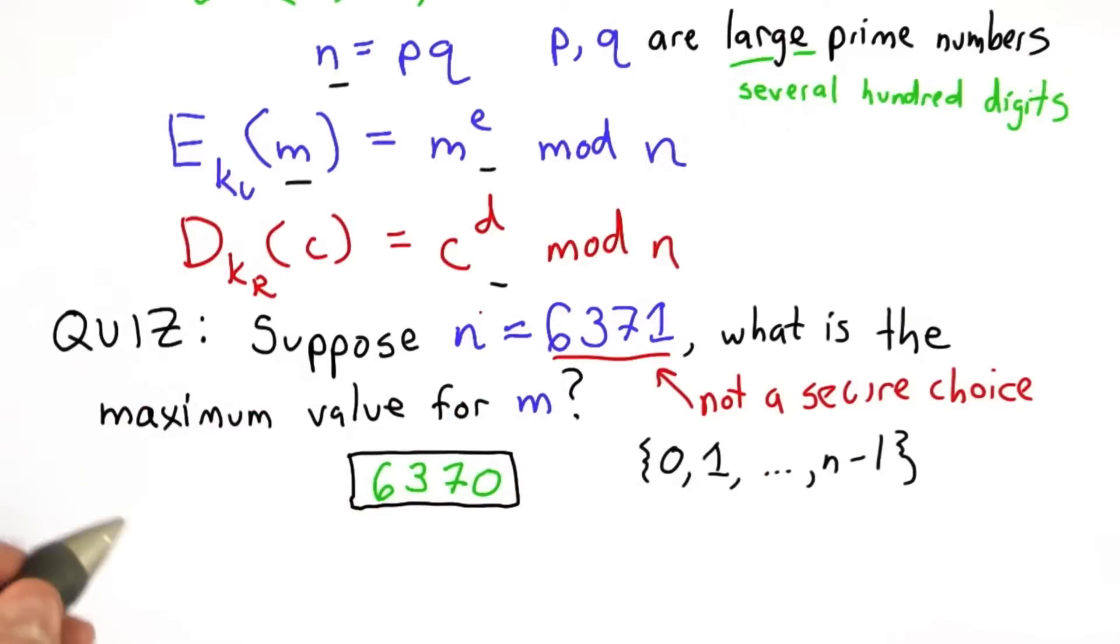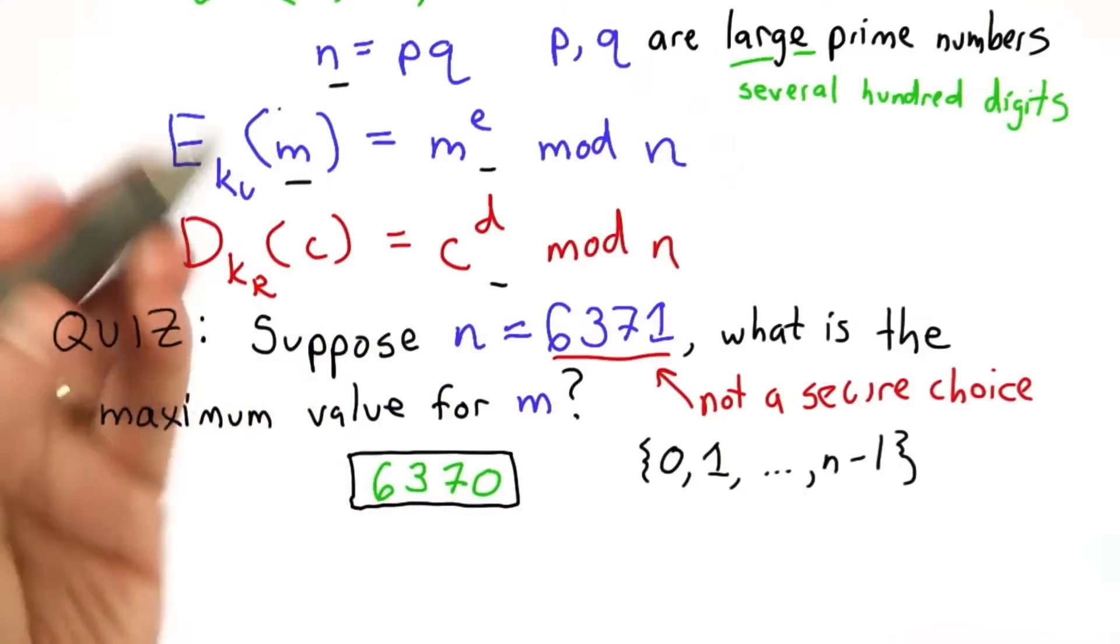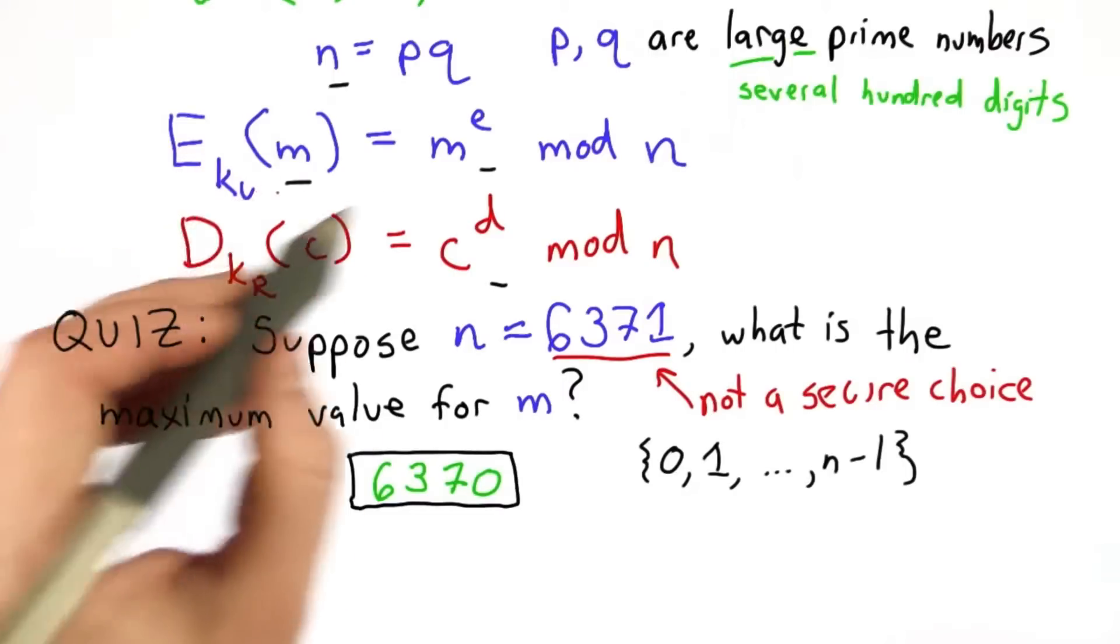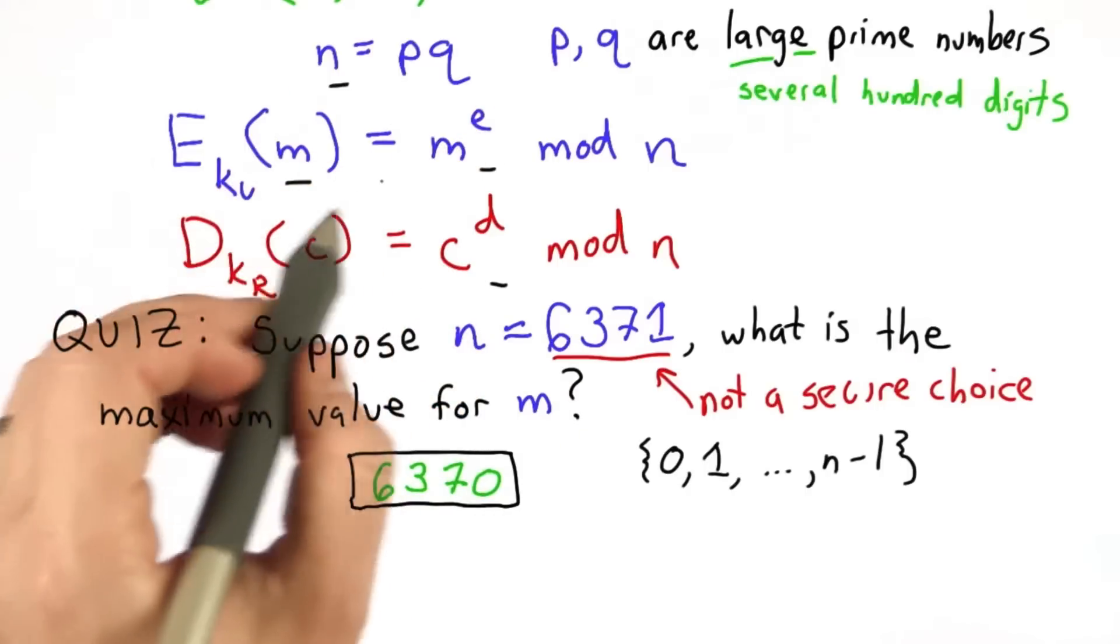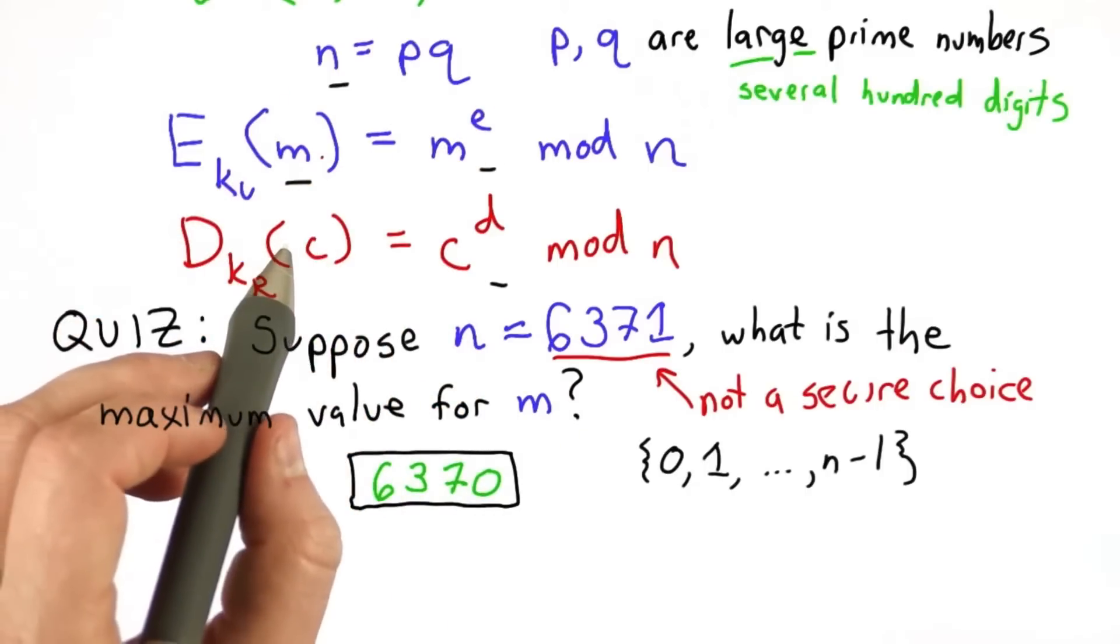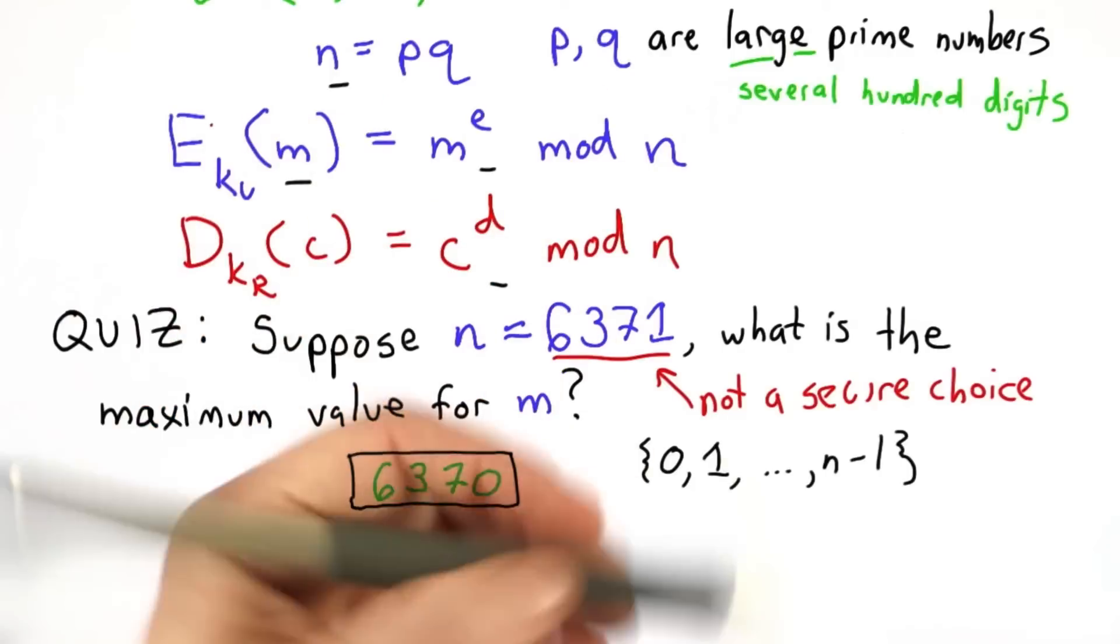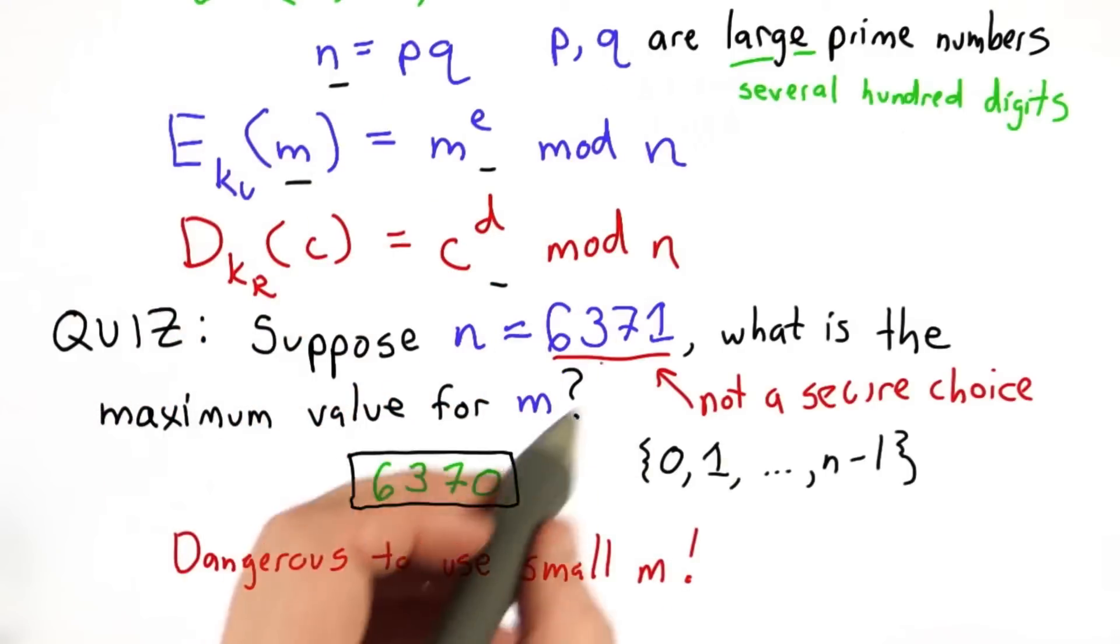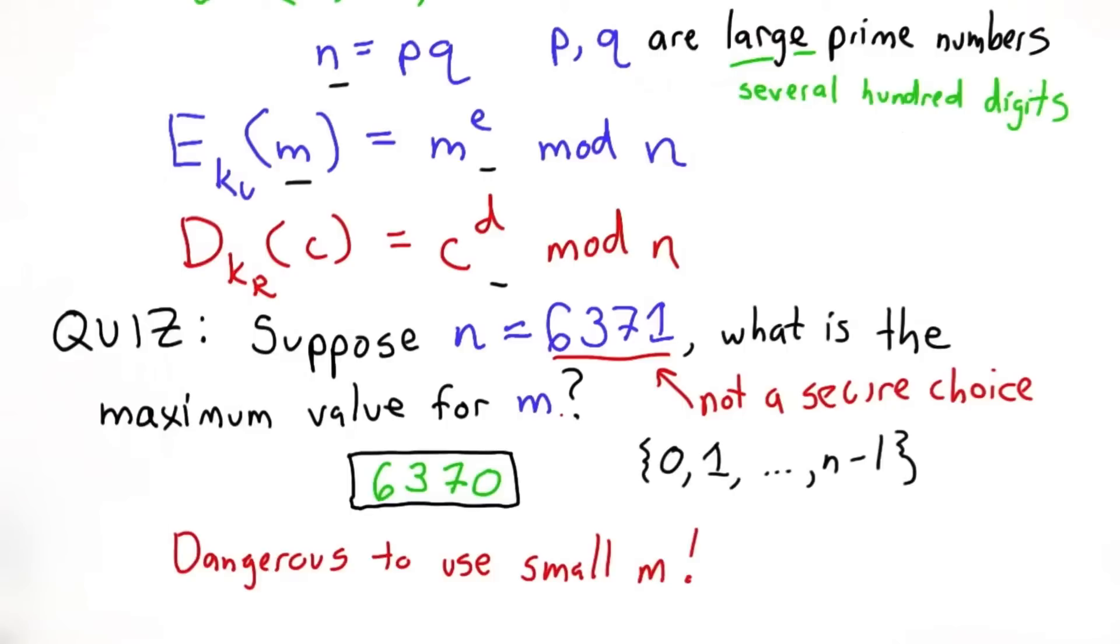it's dangerous for any small value to use this encryption. And one reason you can see that, and we'll talk more about this later, is the key is public. We're assuming that the adversary knows e. So if there's only a small possible set of m values, the adversary can just try them all and see which one maps. So it's very dangerous to use a small m as the input message for RSA.